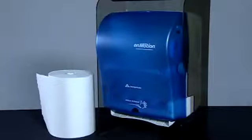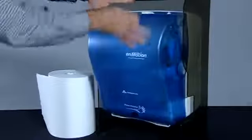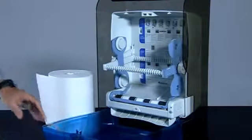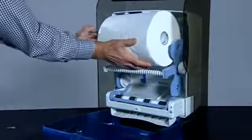To load the Unmotion dispenser, begin by opening the cover with the key. Place the new roll in the top bracket. Make sure that the paper feeds over the top of the roll.